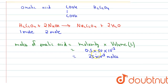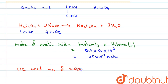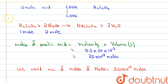We have 25 × 10⁻³ moles of oxalic acid, and since it needs two times the moles of NaOH, the number of moles of NaOH equals two times the moles of oxalic acid, which gives us 50 × 10⁻³ moles.